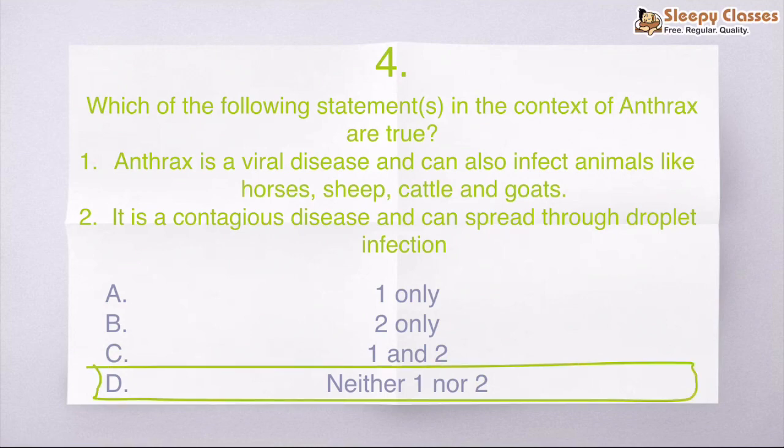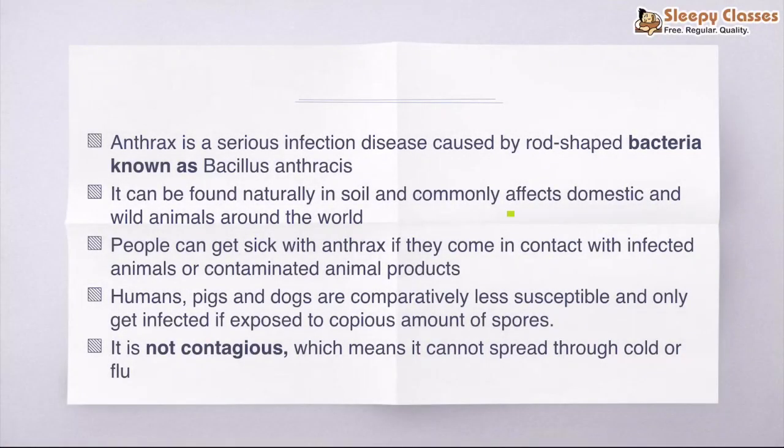So both statements are wrong. Basically, anthrax is a bacterial disease. What is the name of the bacteria? Bacillus anthracis. So it is a serious infection and the bacteria is rod-shaped. And commonly this bacteria is naturally found in the soil.